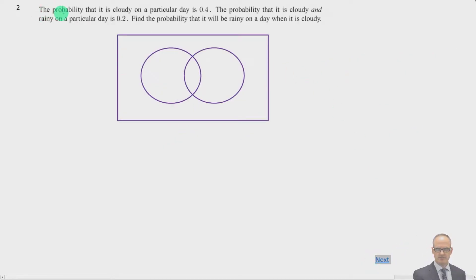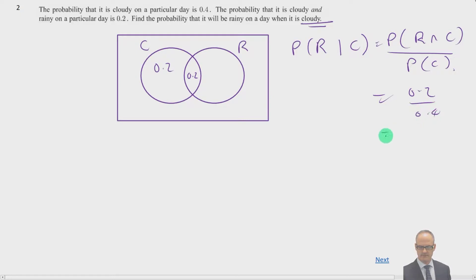Right. We're going to look at this question. The probability it is cloudy on a particular day is 0.4. The probability it is cloudy and rainy on a particular day is 0.2. So we can put that in straight away. We know that the probability of cloudy is 0.4, so this will be 0.2. The probability will be rainy on a day when it's cloudy. We do not need the rest of the information. We know that it's going to be cloudy. So we're just dealing with this. The probability that it is rainy given that it's cloudy is equal to the probability of the intersection, rainy intersect cloudy, over the probability of it being cloudy. The probability of rainy intersect cloudy is 0.2. The probability of it being cloudy is 0.4. It gives us a half.